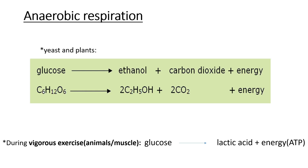The ethanol produced can be used as alcohol directly, since alcohol comes from ethanol. For vigorous exercise in animals or muscles, it's just glucose producing lactic acid. Lactic acid is removed from the body using aerobic respiration inside the liver — this is important as exam questions have come up on this.